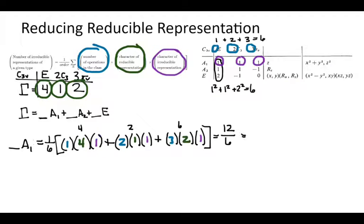Four plus two plus six equals twelve, divided by the order of six, gives us two A1s. So we have two A1 irreducible representations.